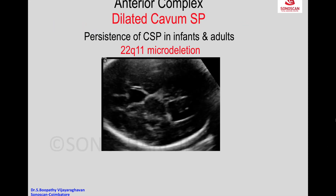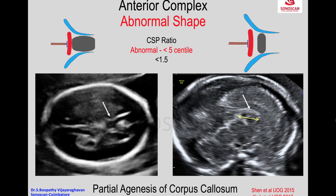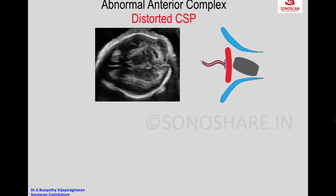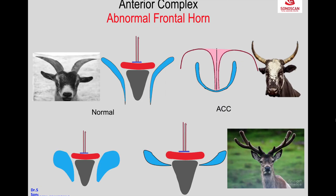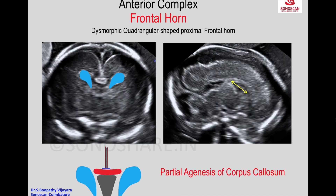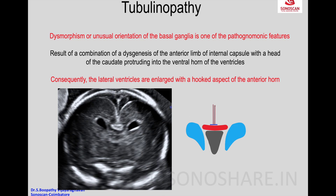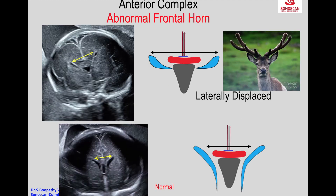Causes include abnormal absence, agenesis of the corpus callosum, and malformations of cortical development. It has been proved to be a feature of 22q11 microdeletion. This fetus turned out to be partial agenesis of the corpus callosum. You see the goat-shaped frontal horns, which is one of the abnormalities seen.